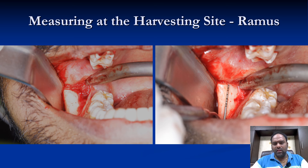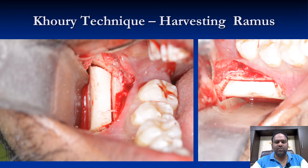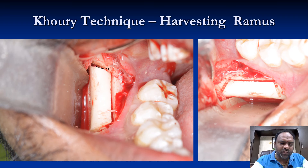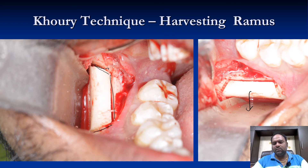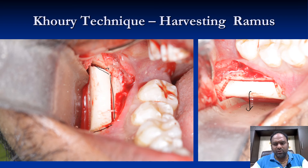We proceeded into the ramus for graft harvesting — which had already been informed to the patient and written consent was taken. We measured the ramus and then harvested the block. Whenever I harvest a ramus graft, I do it at a 45-degree angulation so it comes out easily. The ramus gives quite a good amount of bone compared to the chin or symphysis.